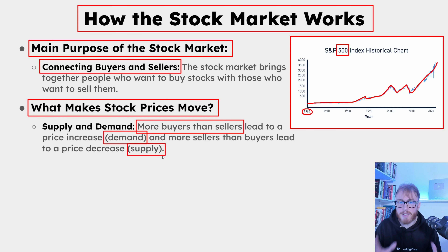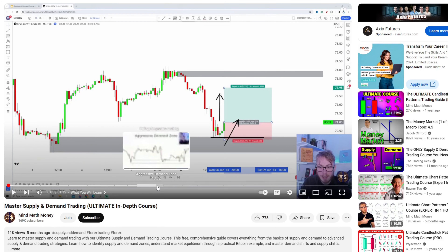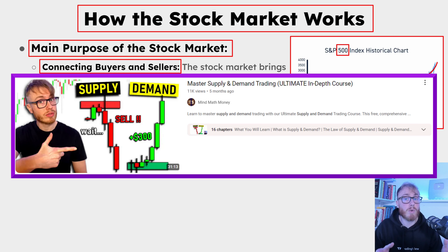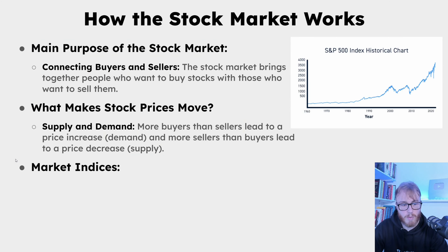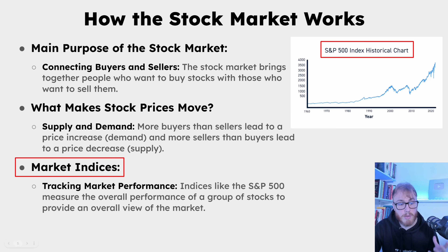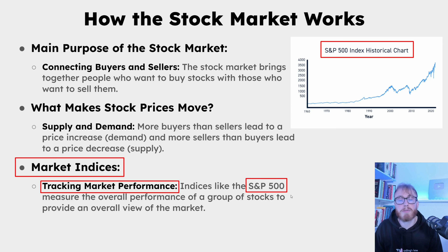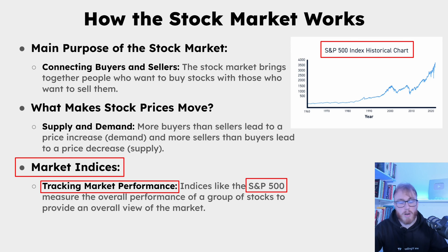This is a simplified explanation, but I actually have a full course on supply and demand on the channel — I'll link that video in the corner and recommend watching it after this course. Regarding market indices: a stock market index tracks market performance. Indices like the S&P 500 measure the overall performance of a group of stocks to provide an overall view of the market.